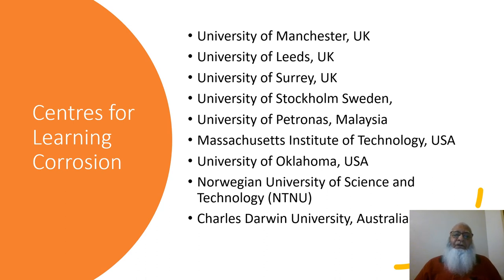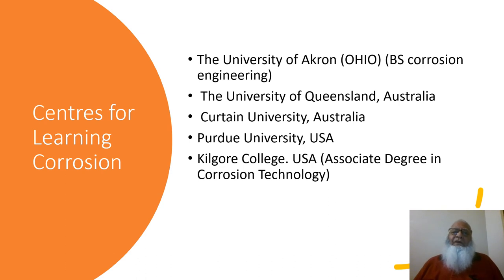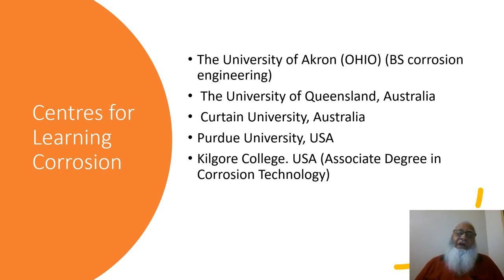The next slide adds more universities offering corrosion courses or corrosion degrees. The University of Akron offers a Bachelor of Science in corrosion engineering. The University of Queensland and Curtin University in Australia, as well as Purdue University and Kilgore College in the USA, offer an associate degree in corrosion technology. There could be many more universities and institutions offering corrosion degrees and specialized courses, whether as a major, minor, or elective course.